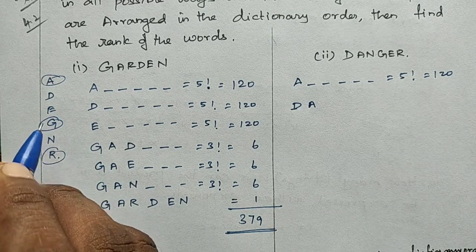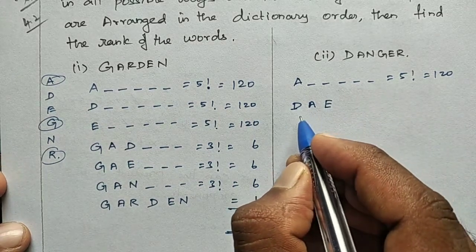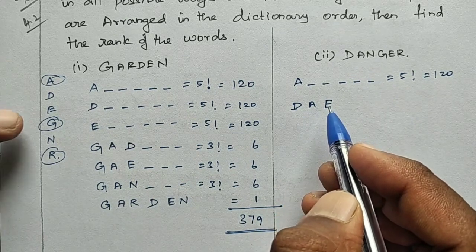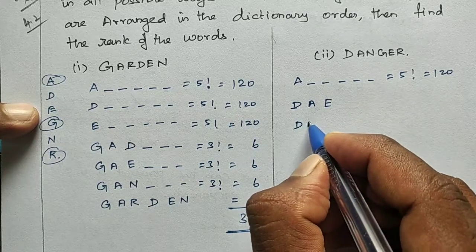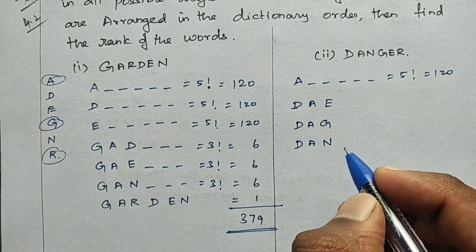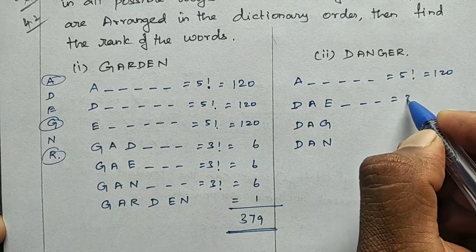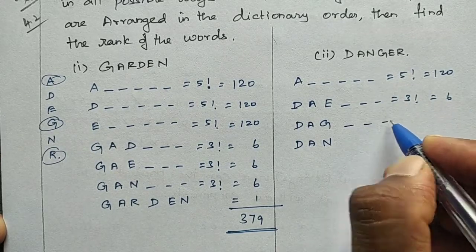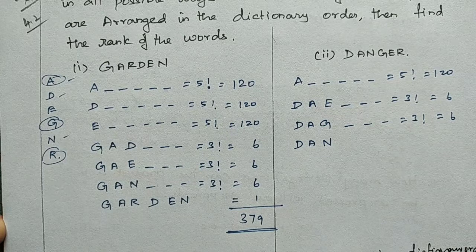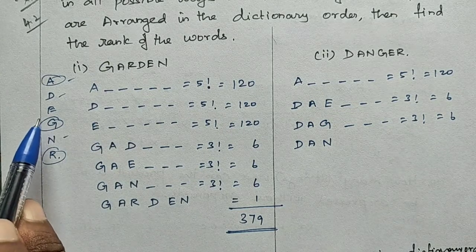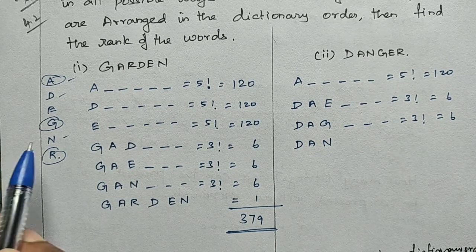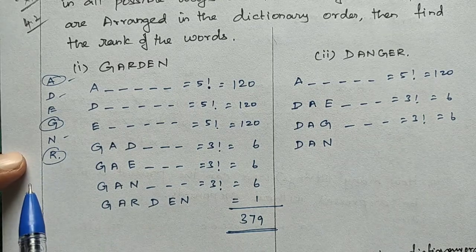Under DA, words starting with DAE: count 1. DAE use — count those arrangements. Then DAG: count 2 arrangements. Then DAN: count arrangements. DAE gives some count, DAG gives count 2, DAN gives count 2 as well.